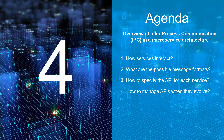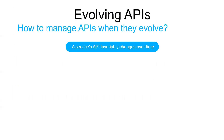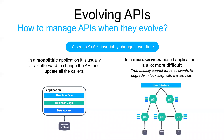A service's API will likely evolve over time, so let's look at how to manage that. APIs invariably change as new features are added, existing features are changed, and old features are removed. In a monolithic application it is relatively straightforward to change an API and update all the callers. In a microservice-based application, changing a service's API is a lot more difficult — the clients are other services, often developed by other teams, and may even be applications outside the organization. You usually can't force all clients to upgrade in lockstep with the service.